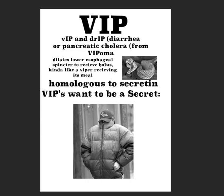VIP is also important for dilation of the lower esophageal sphincter, allowing the bolus descending through the esophagus to be accepted into the stomach. Just as a viper accepts its meal by extending and opening its mouth, remember that's a relaxing of the sphincter to receive the bolus. Furthermore, VIP is homologous to secretin and has the same functions — secretin wants protons to be a secret, so it releases bicarb and blocks proton release in the stomach.